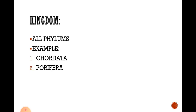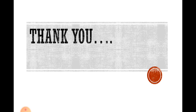Kingdom is the largest and most diverse category. All phylums come under the kingdom — for example, Chordata and Porifera come together to form a kingdom. Species is the least diverse and smallest group in the taxonomical hierarchy. Thank you friends, let's meet in the next part.